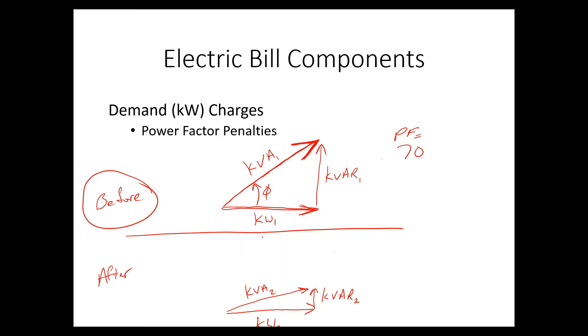And what we want to do is install capacitors, which would basically be a force, a vector fighting this KVAR, it would be a vector down, such that in the after scenario, our KVAR2 is much less than our KVAR1, and thus our KVA2 would be much less than our KVA1 to deliver the same amount of work. So KW1 equals KW2. The work is the same, but the amount that the utility has to do is less.